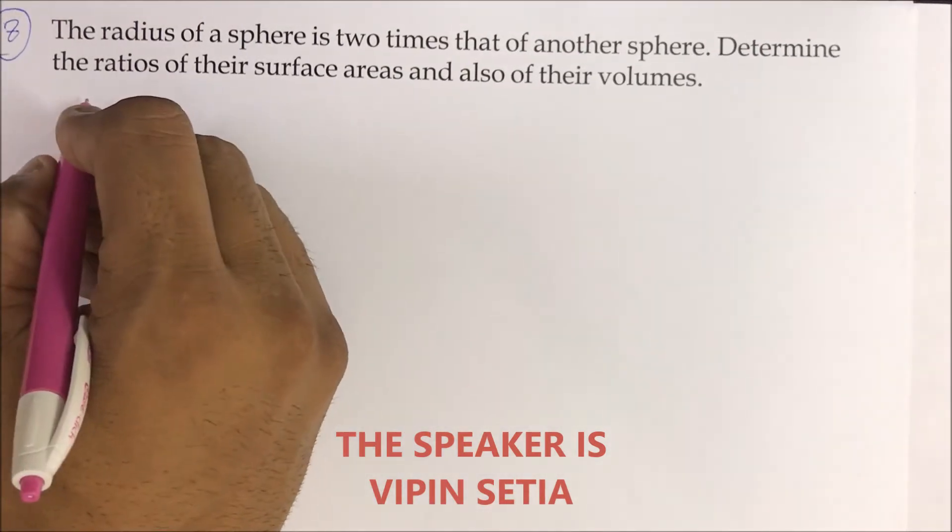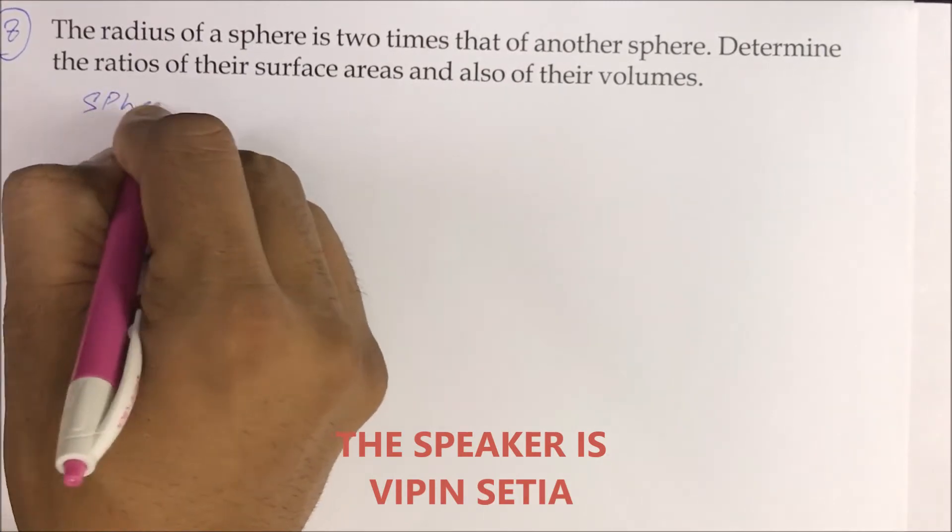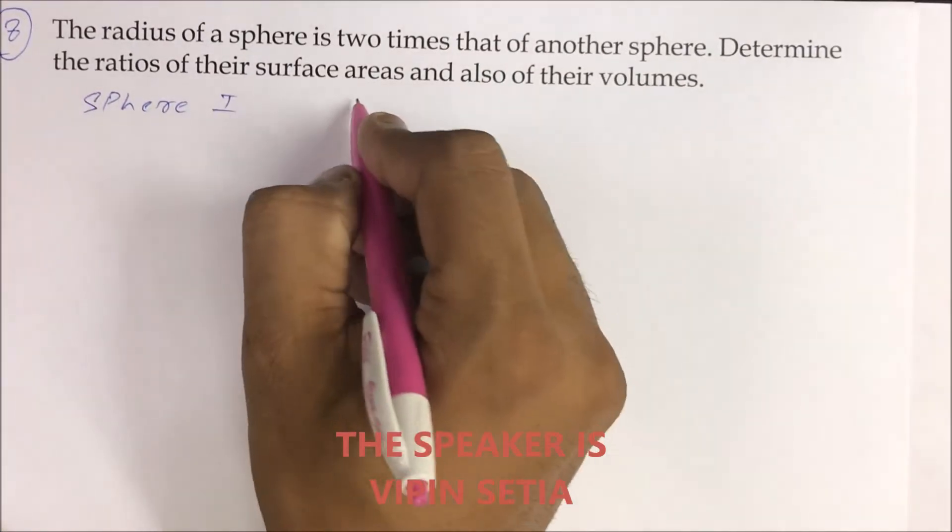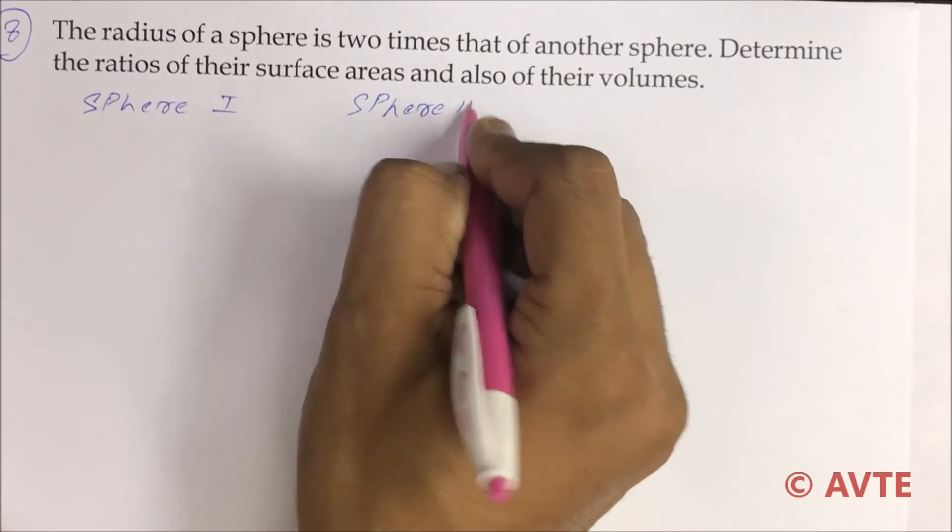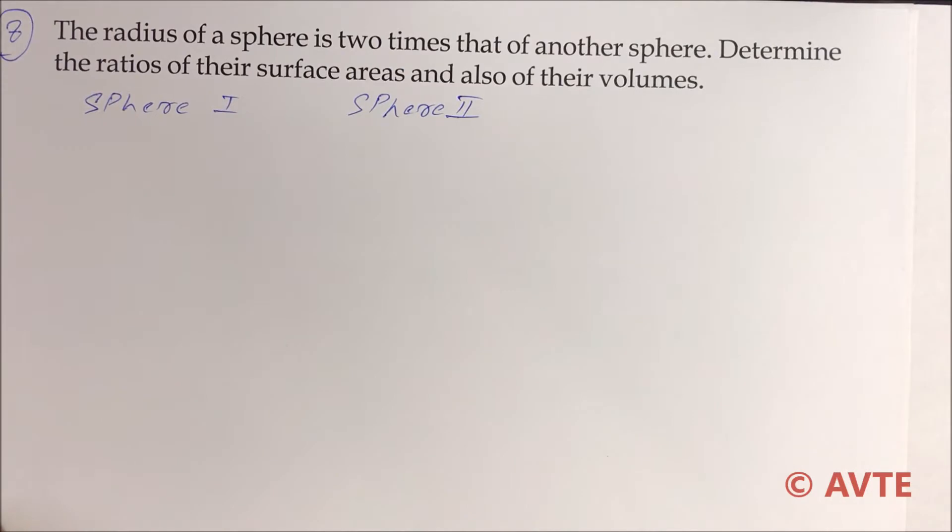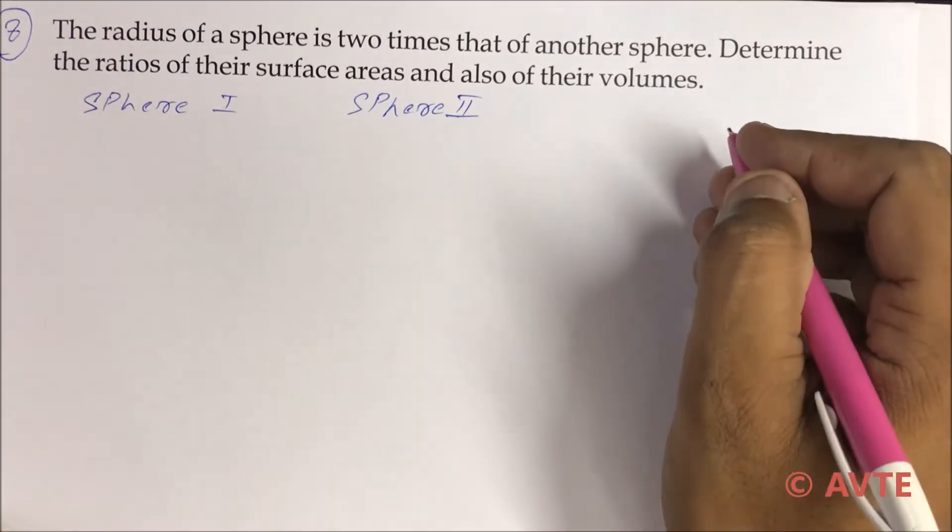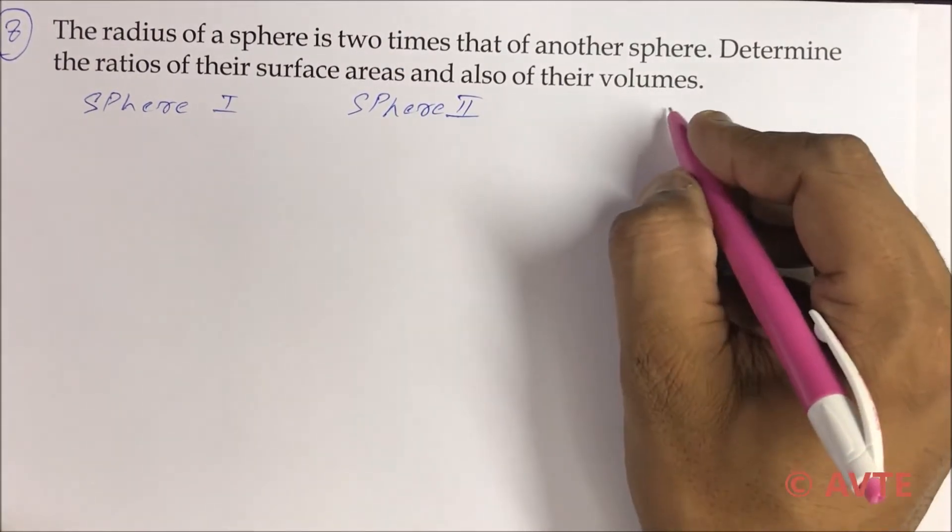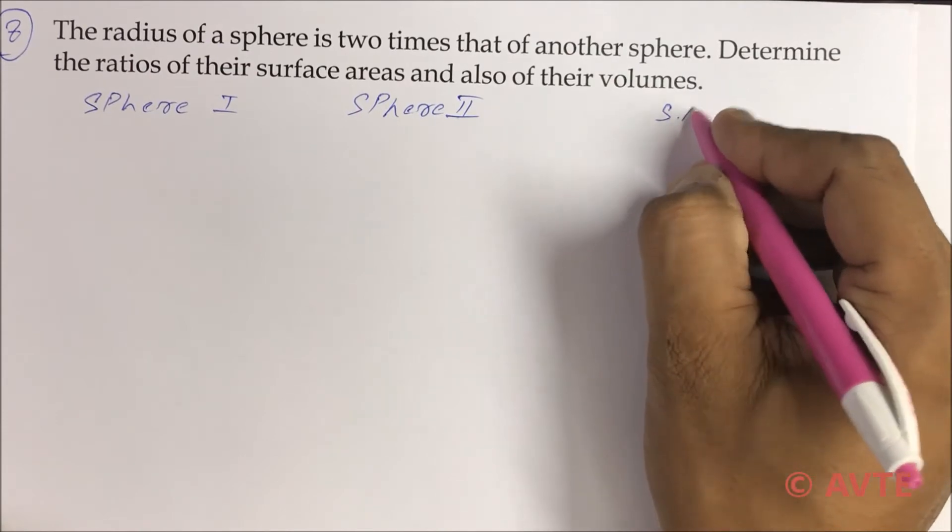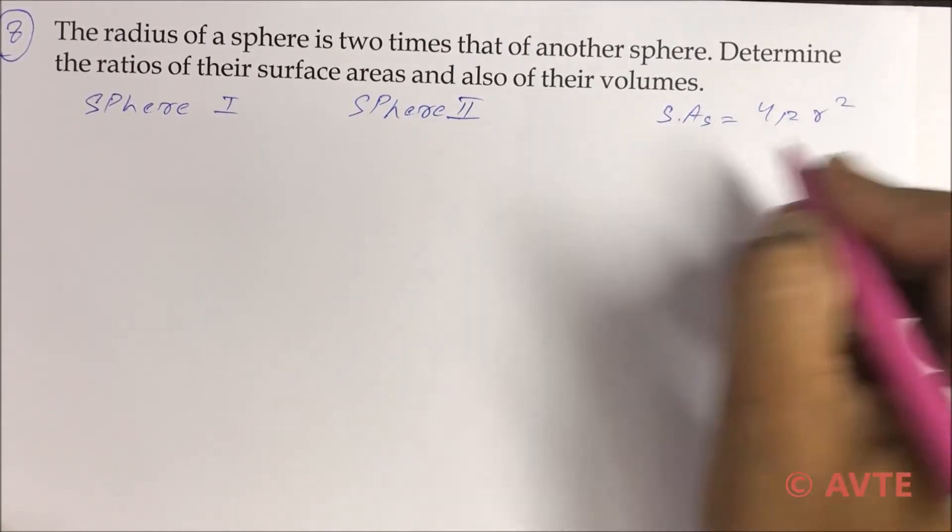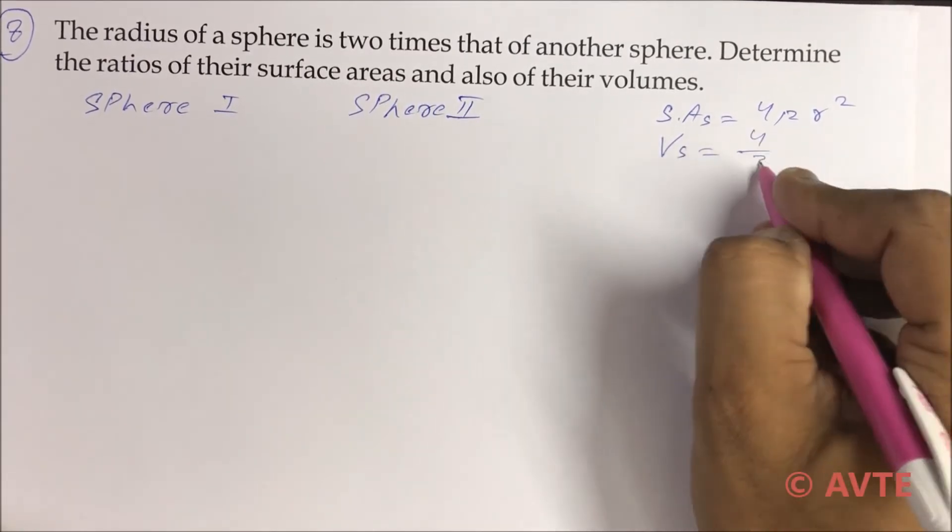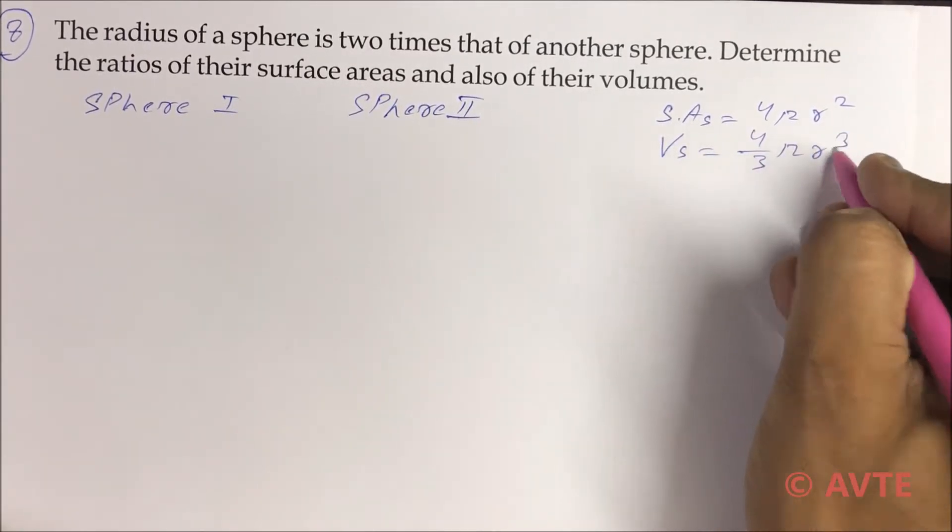So we talk about sphere 1 and we talk about sphere 2. First we check the surface area of the sphere, that is 4 pi r squared, and the volume of sphere is 4 by 3 pi r cubed.